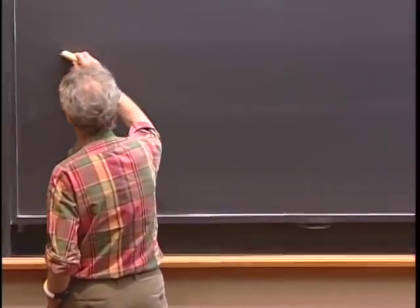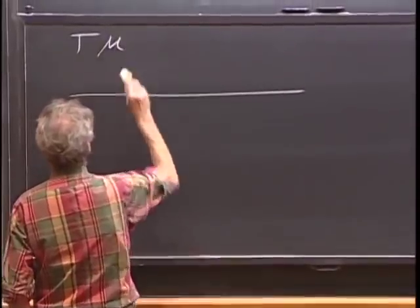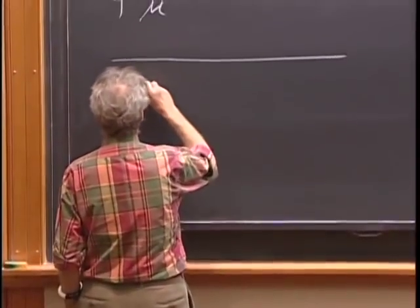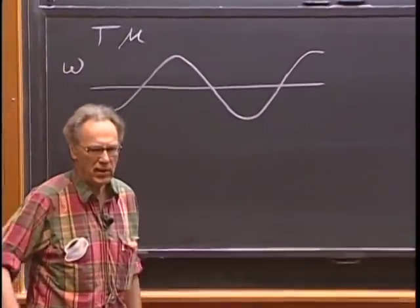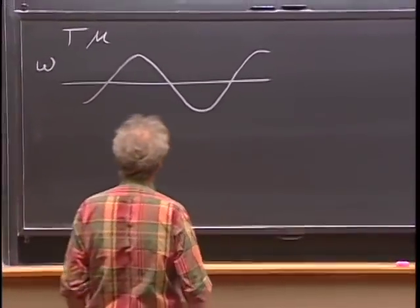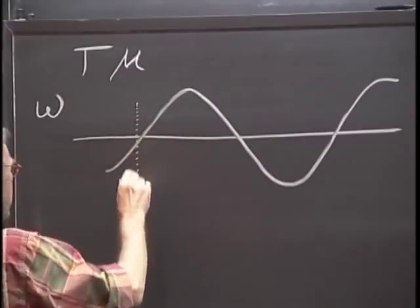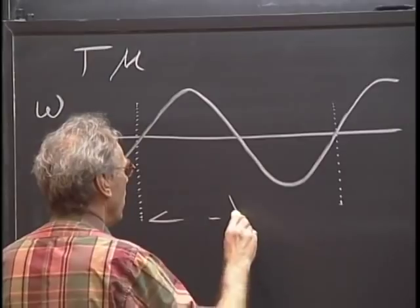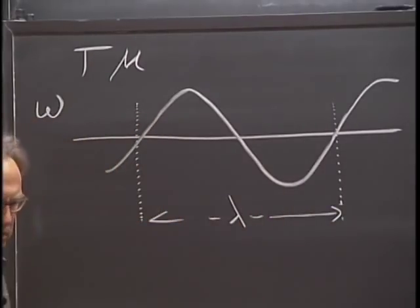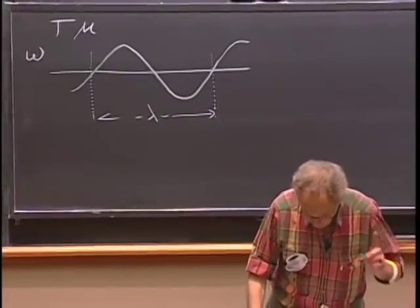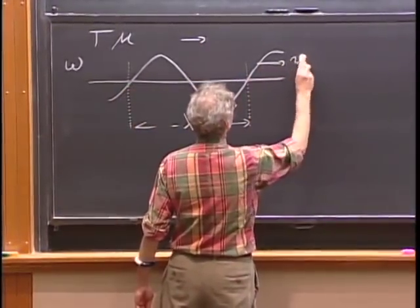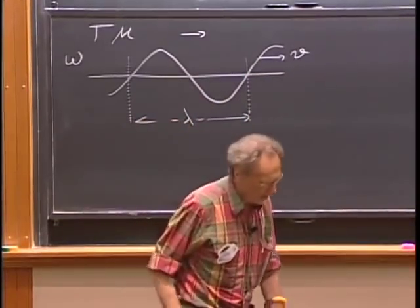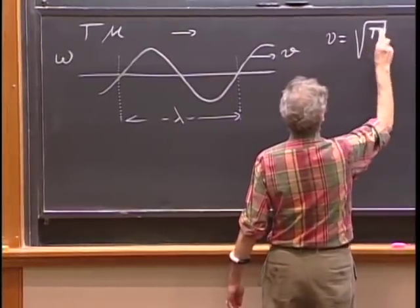Imagine I have a string here. The tension is T, and the mass per unit length is mu. I wiggle one side and generate a wave. I move this up and down with angular frequency omega and amplitude A, generating waves — and this is what we call the wavelength: the distance that the disturbance travels in one oscillation time. If I call this the positive direction, this wave will propagate with speed V in that direction.